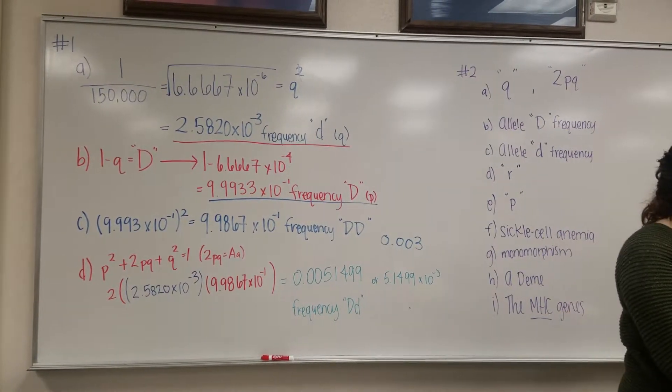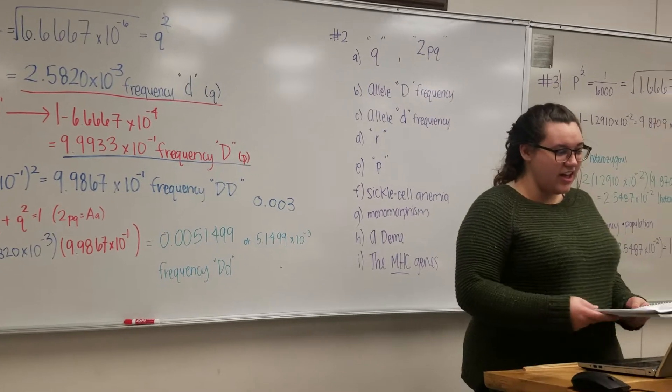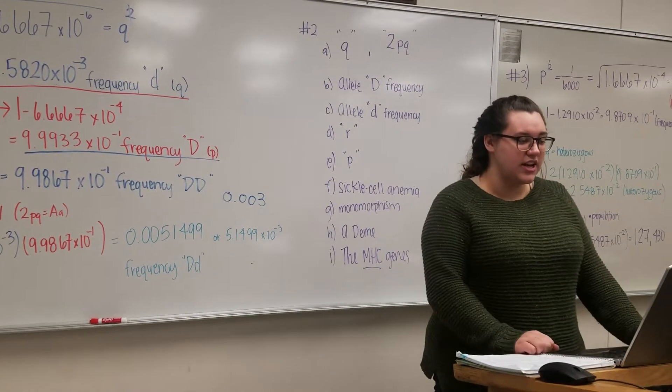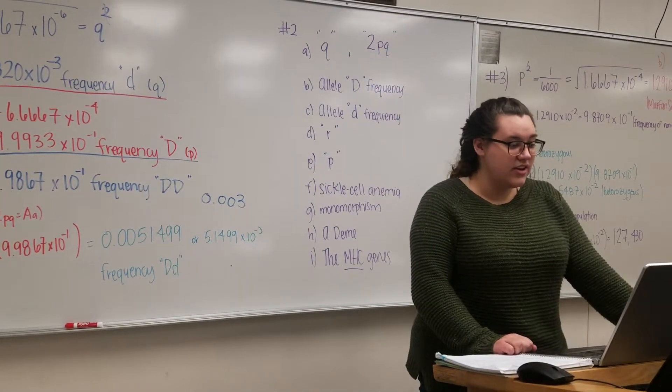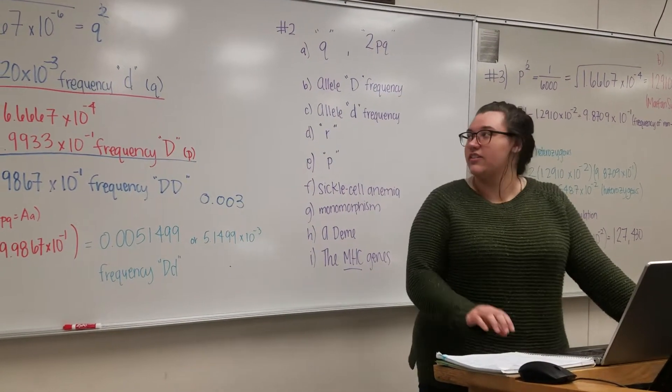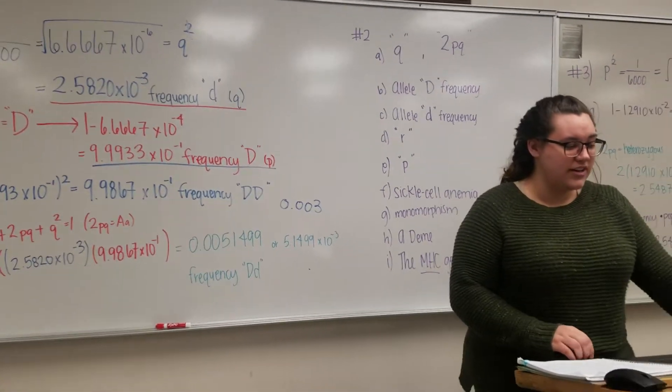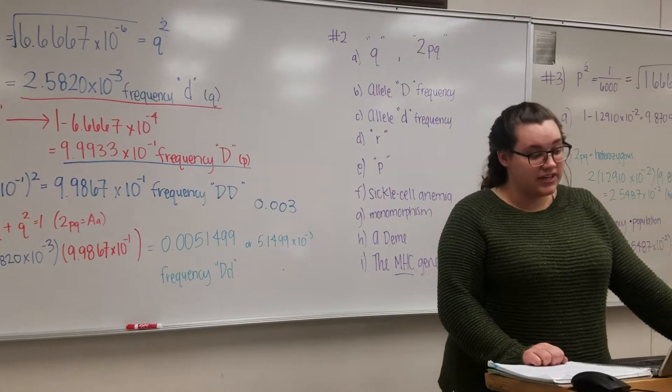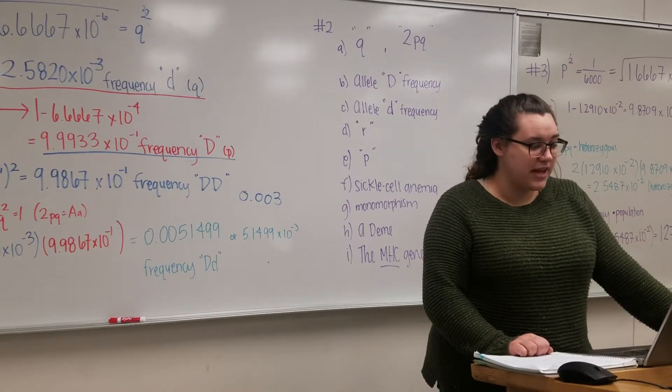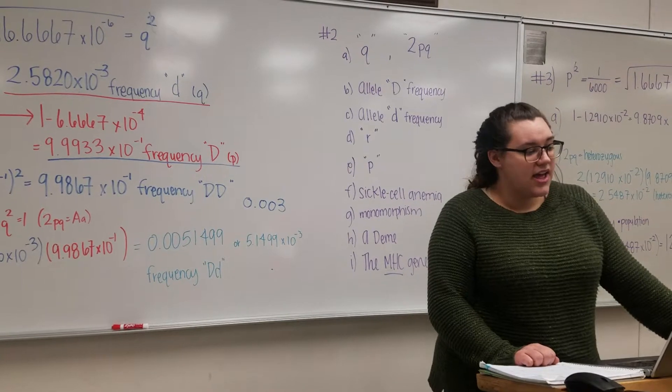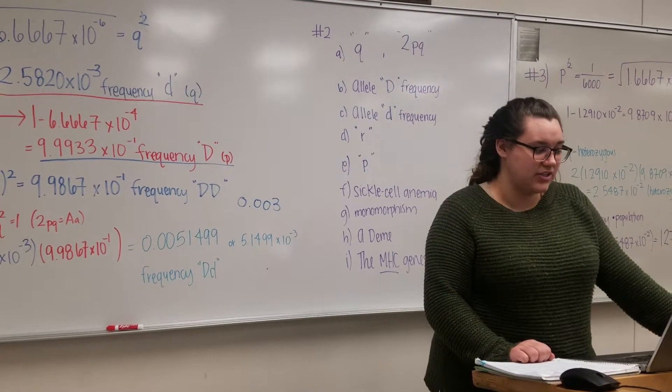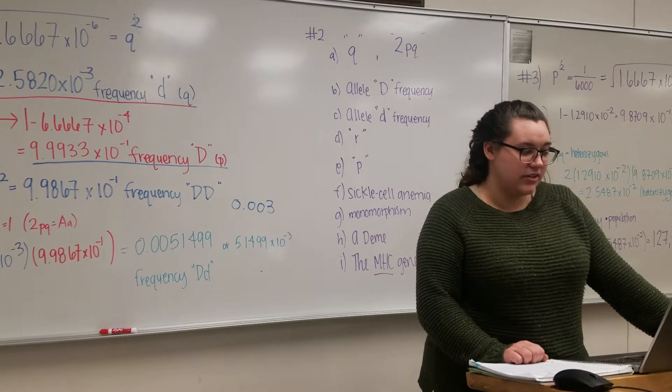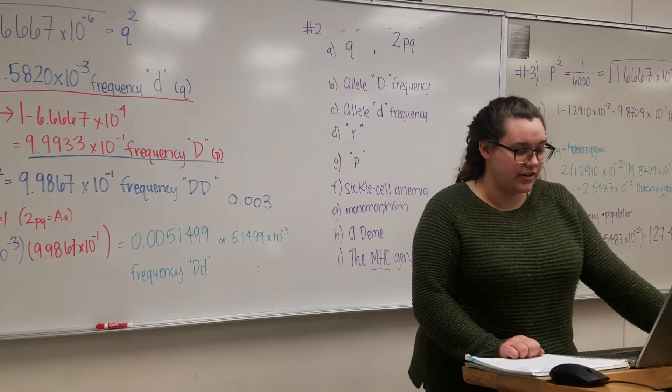Number one says Niemann-Pick disease is a rare genetic disease inherited in an autosomal recessive fashion. The non-disease allele is D, or dominant D, while the Niemann-Pick disease allele is recessive d. Suppose that the Niemann-Pick disease affects one out of 150,000 individuals in a certain population. In all cases, parts A through D, please indicate your answer to four decimal places.